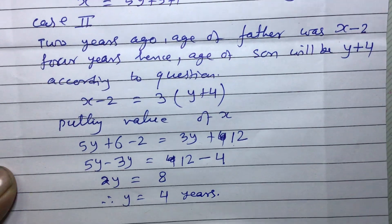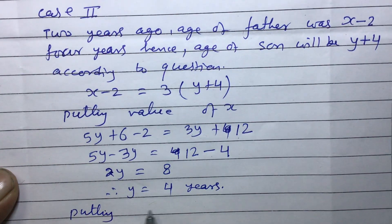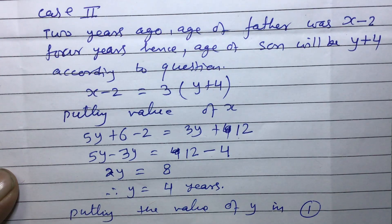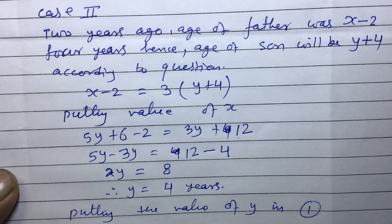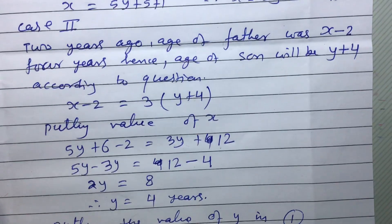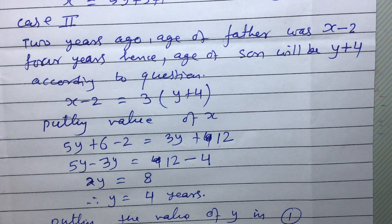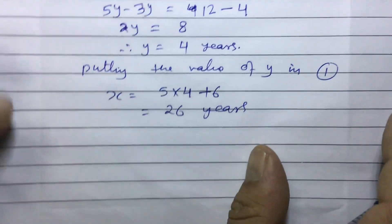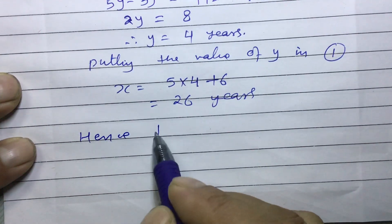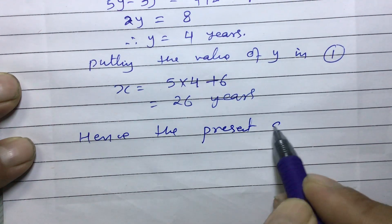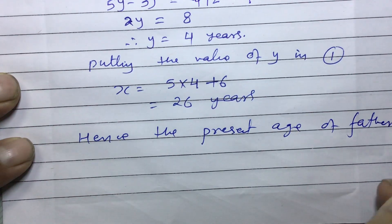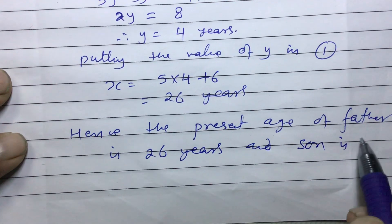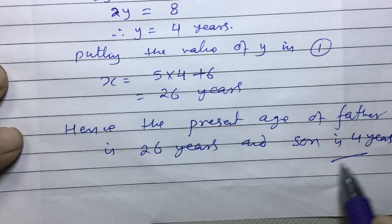Now putting the value of y in equation one: x = 5y + 6 = 5(4) + 6 = 20 + 6 = 26 years. So we got the age of the father. Hence the present age of the father is 26 years and the son is 4 years. Thank you for watching this video.